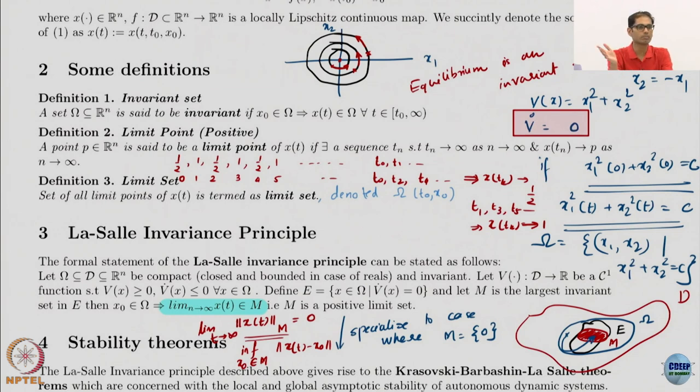Compact means closed plus bounded, so bounded is done. Is it closed? Is this a closed set? Is the circle a closed set? How do you define a closed set? Contains all its limit set points.